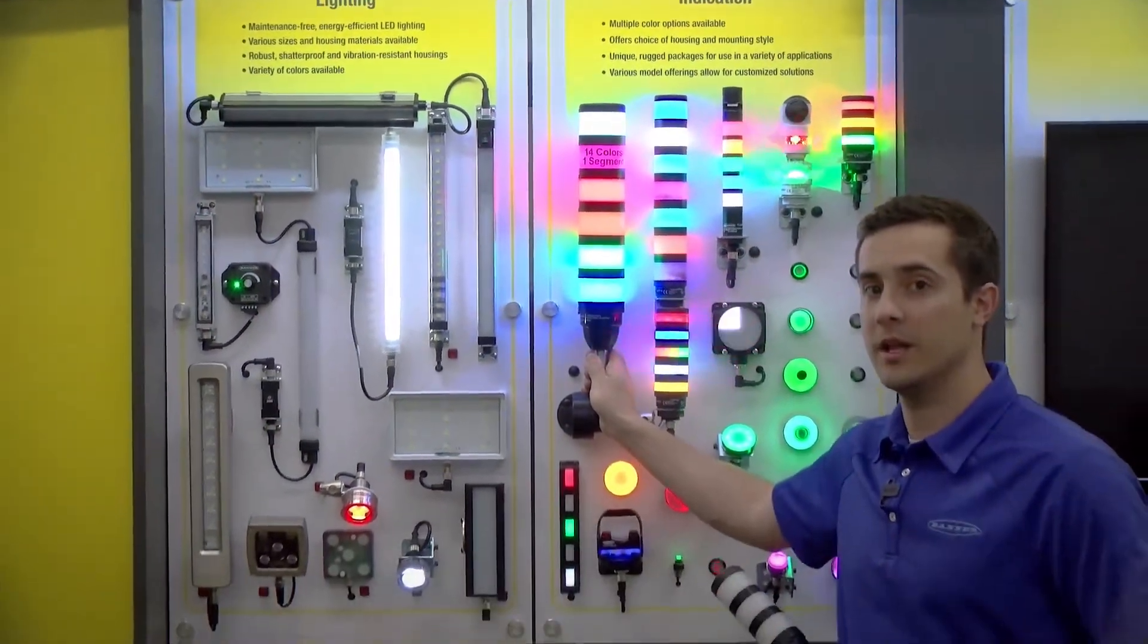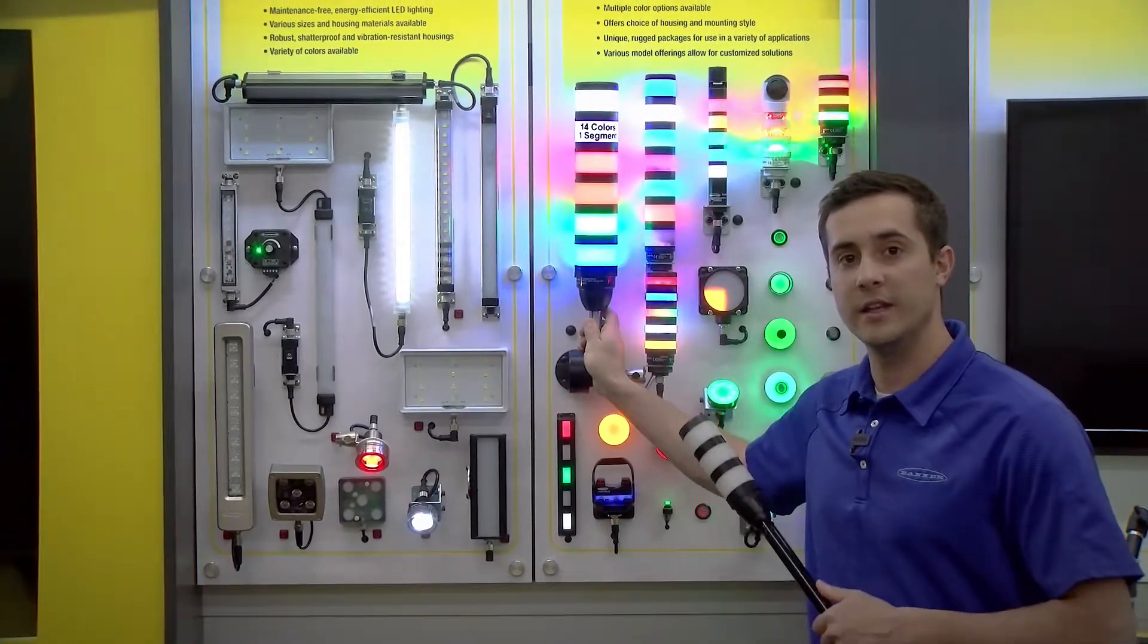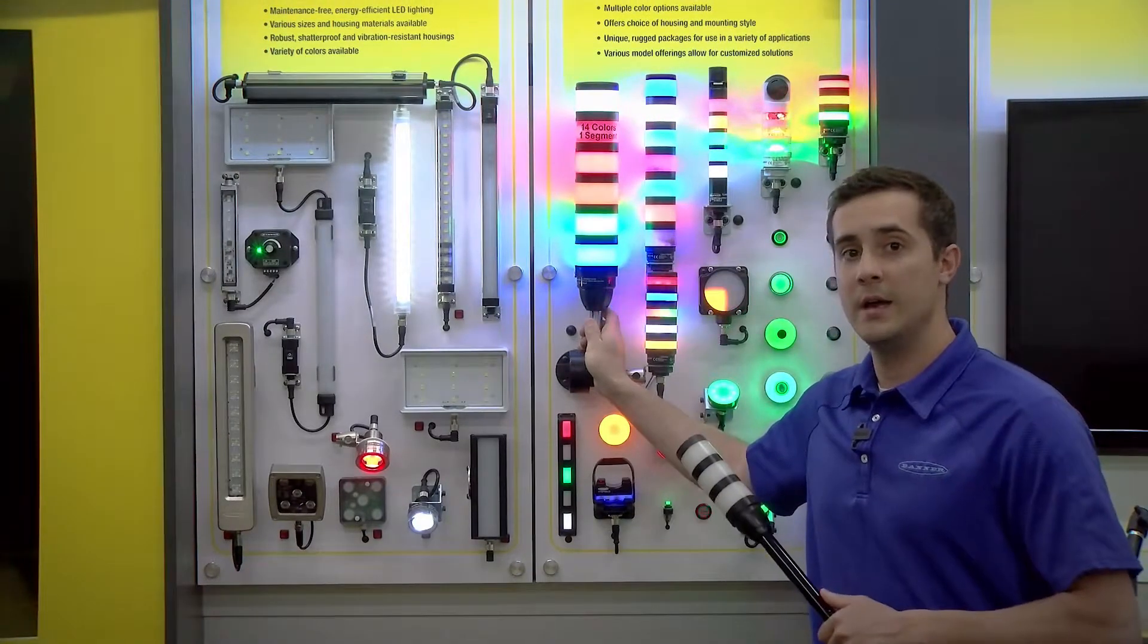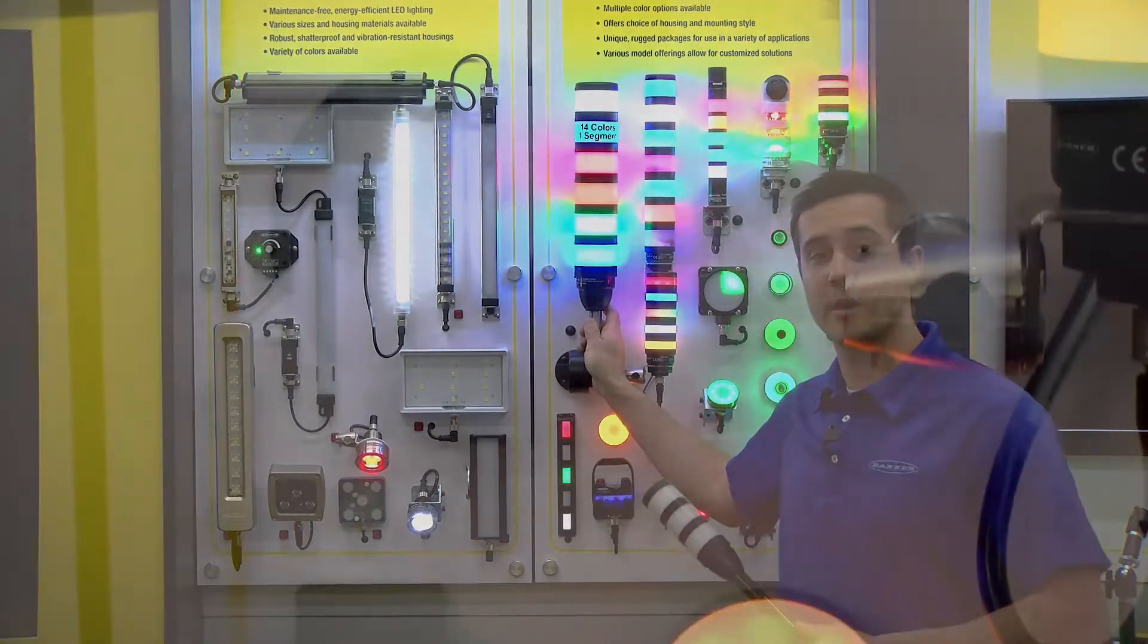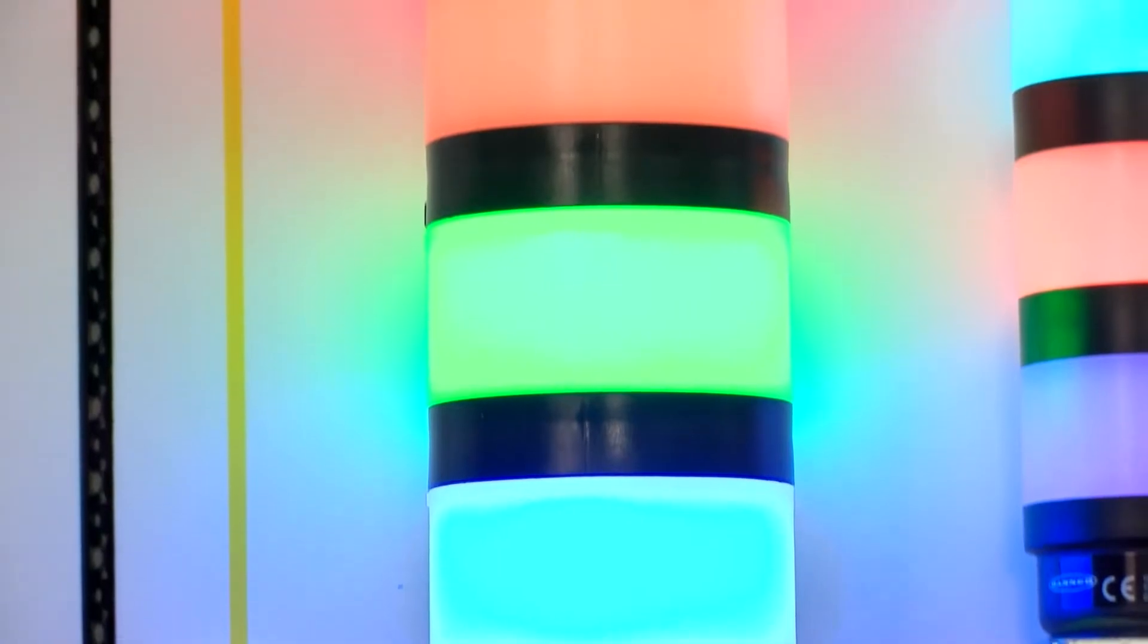I'm going to start back here on our demo board with what we call a TL-70 tower light. This is not a revolutionary type of technology in the industry. It's a 70 millimeter modular tower light, but what differentiates this tower light from our competitors is our ability to increase supply chain savings for our customers.